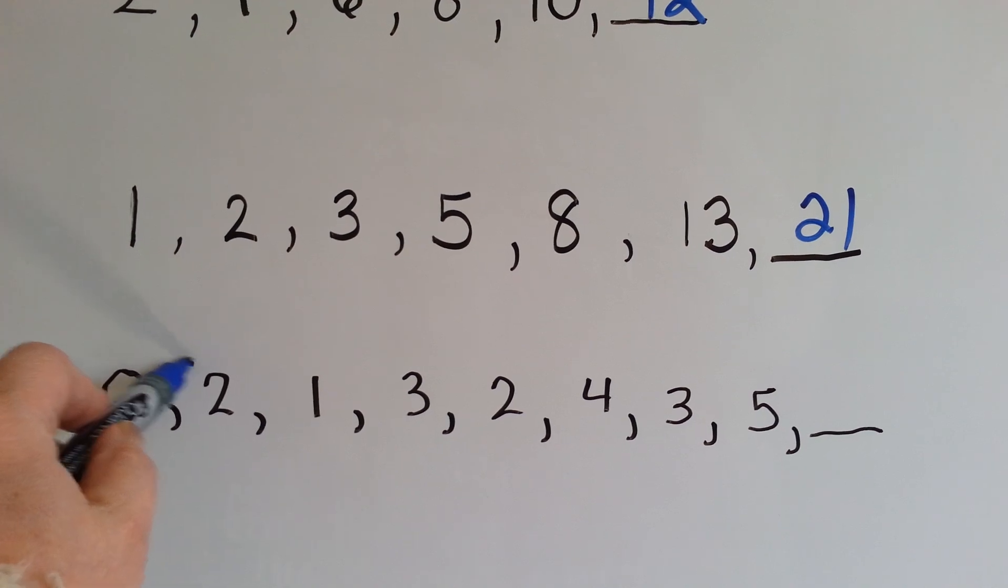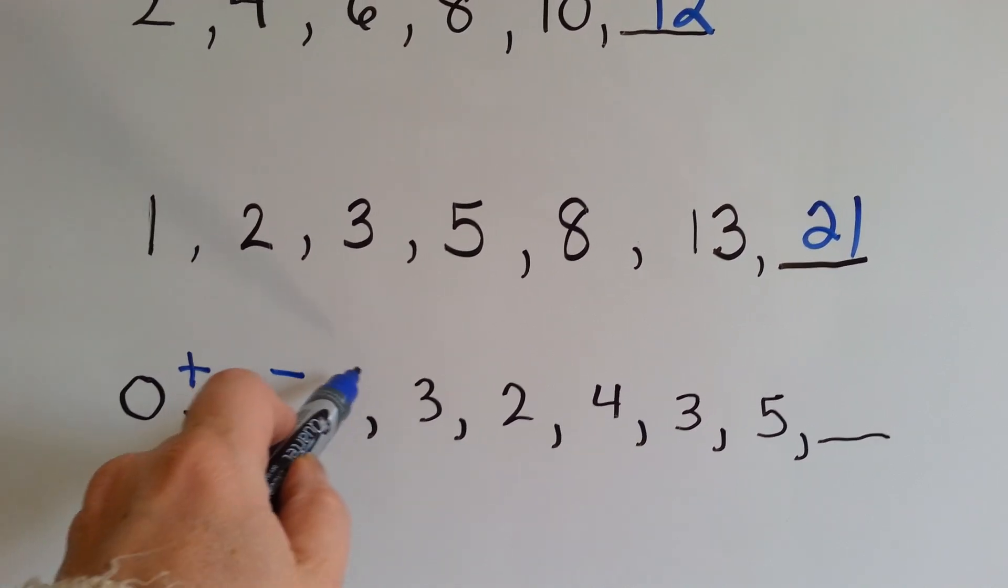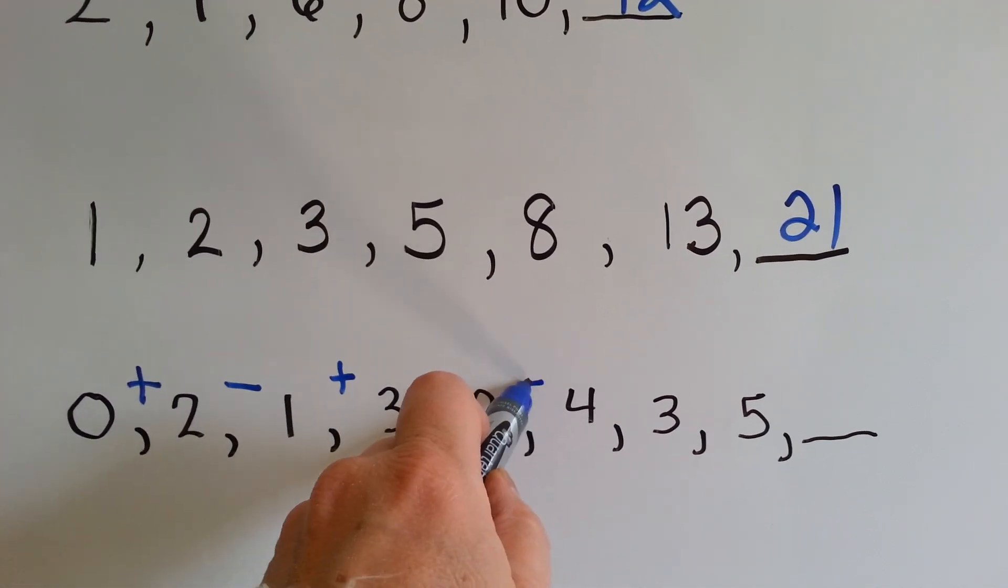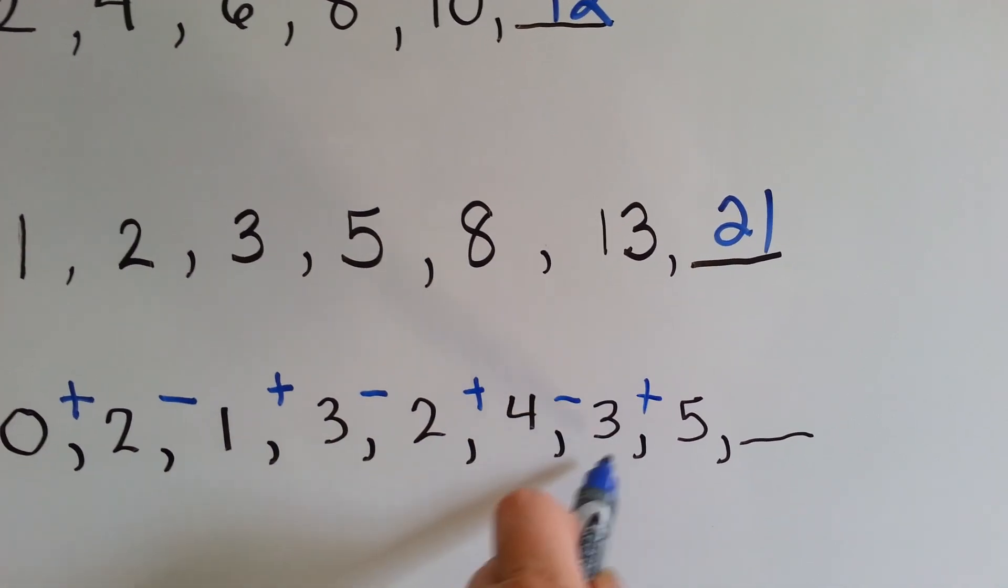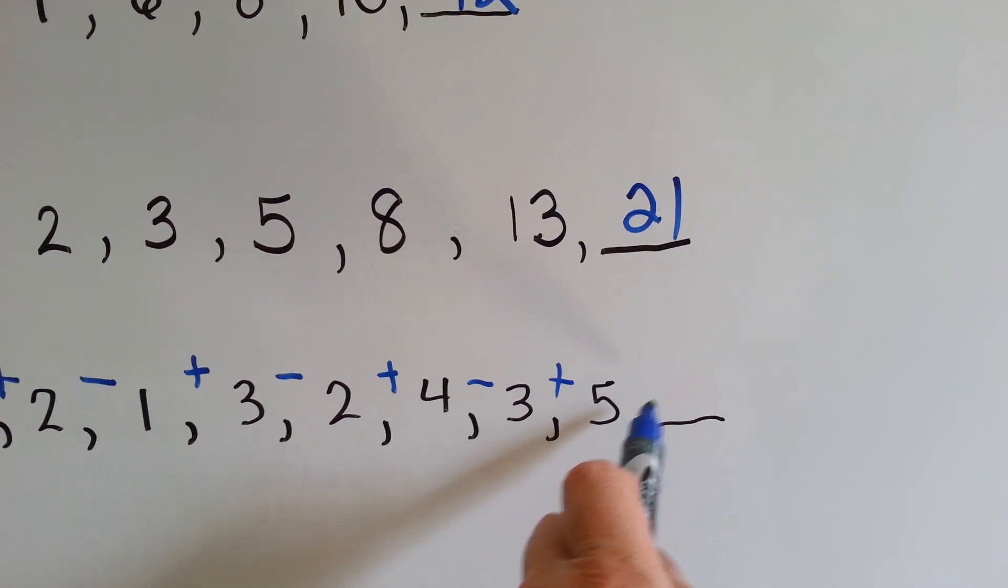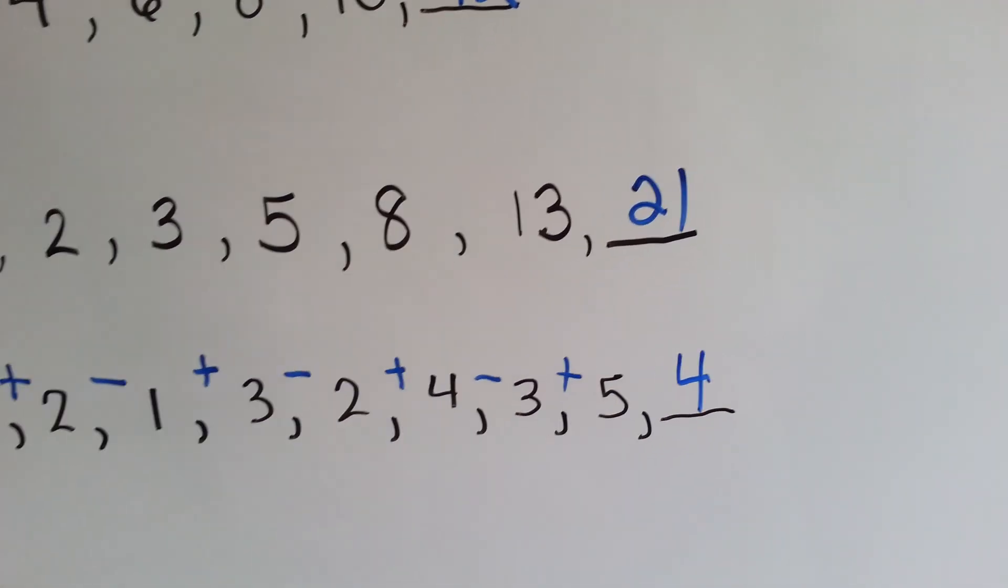This one is adding 2 and then taking away 1. Adding 2, taking away 1, adding 2, taking away 1, adding 2. So, if we took away 1, what would go here? 4. If you said 4, you're right.